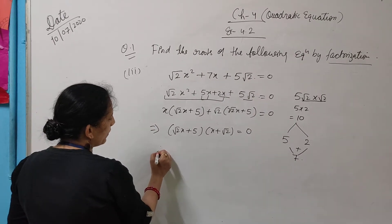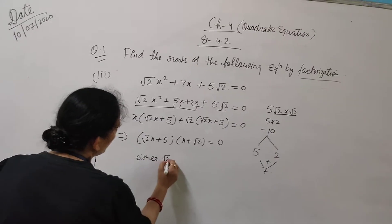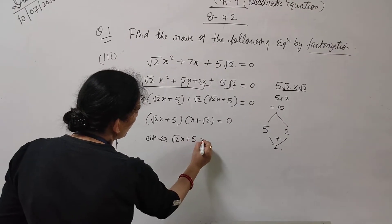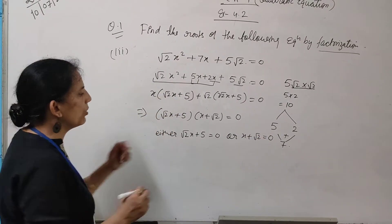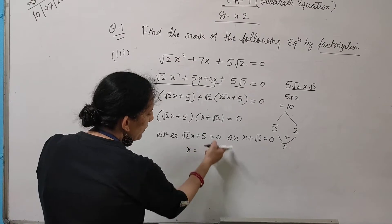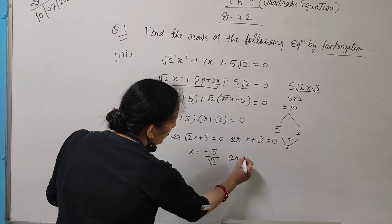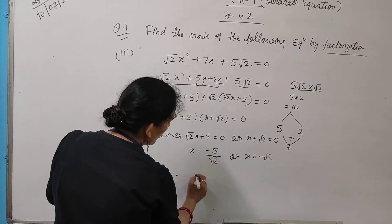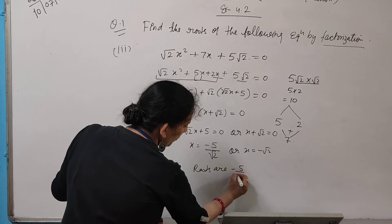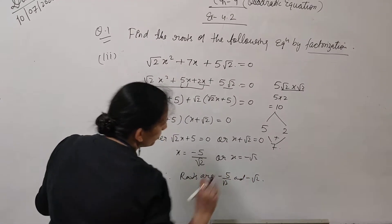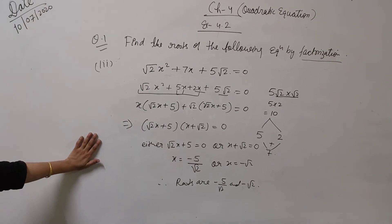Again, therefore, either √2x plus 5 is equal to 0, or x plus √2 is equal to 0. So x is equal to minus 5 by √2, and x is equal to minus √2. So this way you can find out the roots of this equation as well.